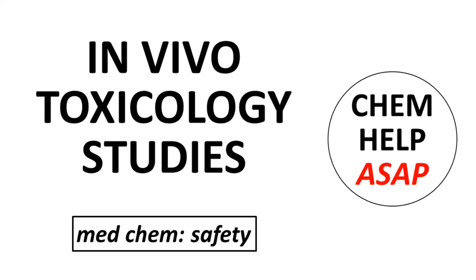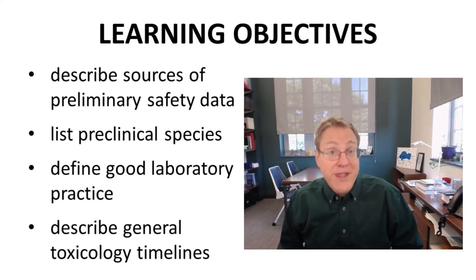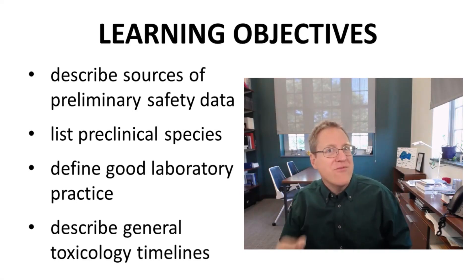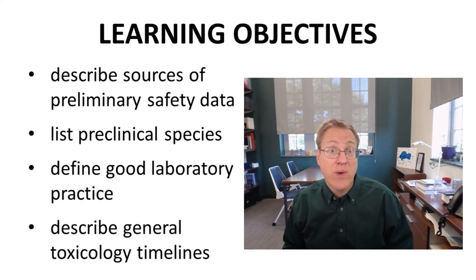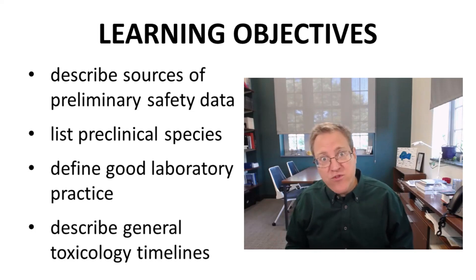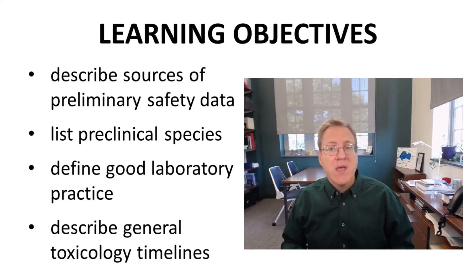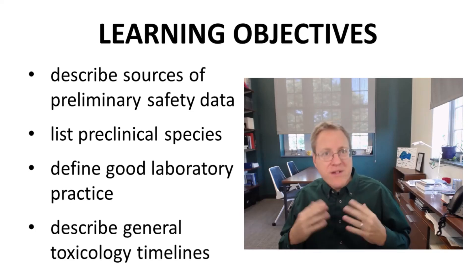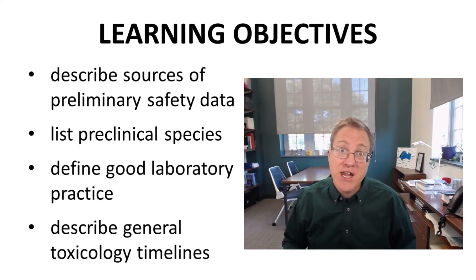Good day to you from ChemHelp ASAP. In this video, we will discuss different aspects of in vivo preclinical safety studies performed during drug discovery and preparation for clinical trials. By the end of this video, students will be able to describe how very early in vivo safety data are generated, list common animal species used in preclinical safety, define good laboratory practice, and describe timelines for general toxicology studies.